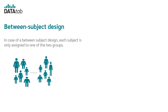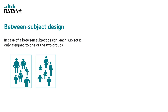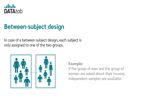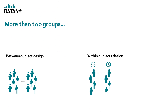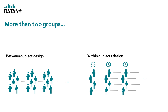In a between-subject design, each subject is only assigned to one of the two groups. For example, if a group of men and a group of women are asked about their income, independent samples are available. Of course, in both designs, there can also be more than two groups — in other words, the factor to be analyzed can have more than two levels.